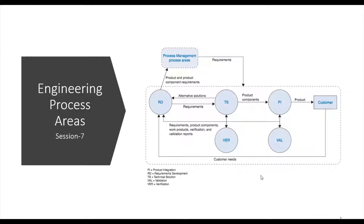Engineering Process Areas cover the development and maintenance activities that are shared across Engineering Disciplines. They were written using General Engineering Terminologies so that any technical discipline involved in the Product Development Process — for example, Software Engineering or Mechanical Engineering — can use them for Process Improvement.